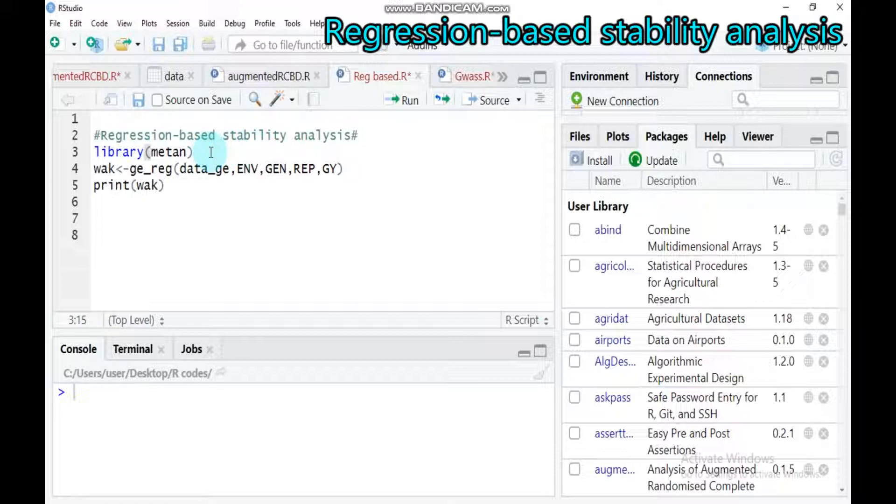In order to run this regression-based stability analysis, we have to use a package called library metan and you have to incorporate it in your RStudio. Then you can assign any name that you want. For example, I assigned here is wac, and also you have to use a function g_reg. You have to use this function in order to run the regression-based stability analysis.